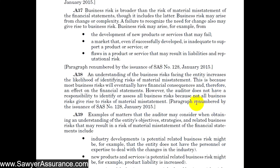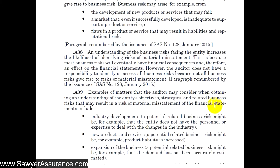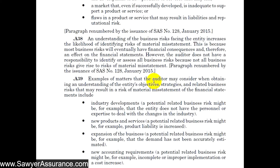The better we understand the organization and its business risks, the more likely we will encounter risk of material misstatement, because these business risks eventually become financial risks and have financial consequences. We're not required to understand or uncover every business risk of the entity, but we should make an effort to determine the ones that are significant and could possibly cause a material misstatement. A few things we might consider when obtaining an understanding of their objectives, strategies, and business risks include the following.